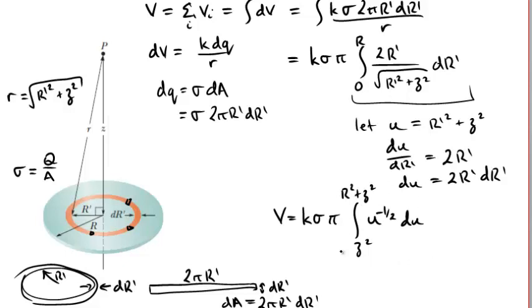Now, hopefully, that's an integral that's reasonably straightforward for you to do. The integral of u to the minus a half du. That's just a simple polynomial integral to do. And if you do that integral, you should end up with an answer here that looks like 2π k sigma outside of, and it's not the most straightforward expression, but it is the square root of capital R squared plus z squared minus z. That's what the potential at point P should look like.